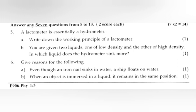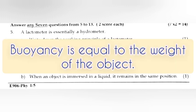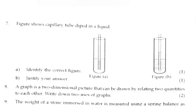Question 6: Give reasons for the following. (a) Even though an iron nail sinks in water, a ship floats on water. Answer: principle of flotation. (b) When an object is immersed in a liquid it remains in the same position. Answer: buoyancy is equal to the weight of the object. Question 7: Figure shows a capillary tube dipped in a liquid. (a) Identify the correct figure. Answer: figure A. (b) Justify your answer. Answer: the capillary depression occurs in mercury.